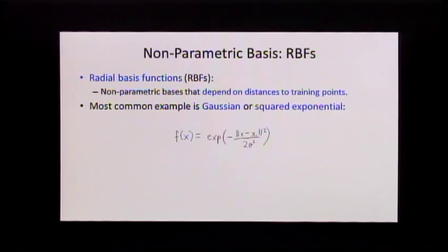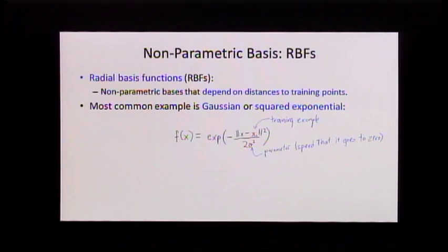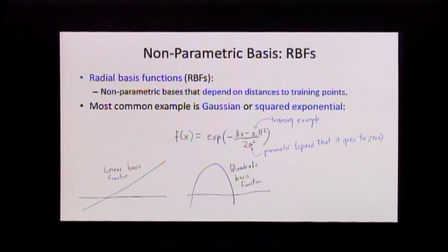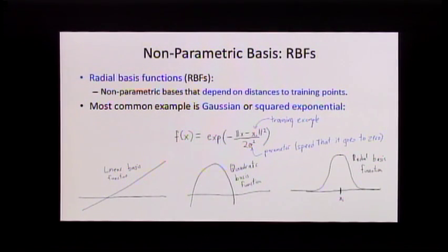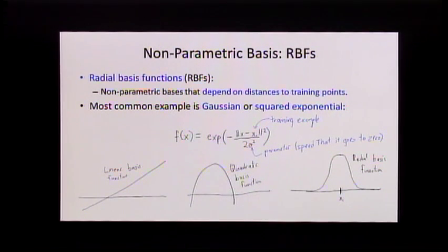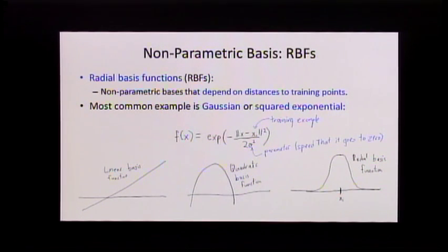One of the most common non-parametric bases is called radial basis functions — bases that depend on distances to training points. The reason they're non-parametric is that if you have more data points you have more distances. The most common example is the Gaussian or squared exponential: these functions look like a Gaussian distribution, where X1 is a training point, X is the input, and sigma-squared is the variance parameter — the speed at which it goes to zero. Contrasting with linear or quadratic bases that have support everywhere, RBF basis functions are large at Xi and go to zero as you move away from Xi — almost zero at three sigma away. You can think of them as basis functions defined only around your training points.